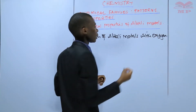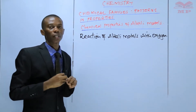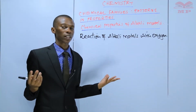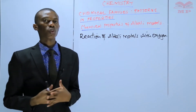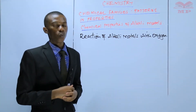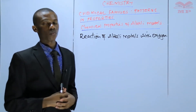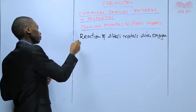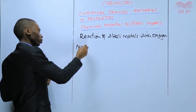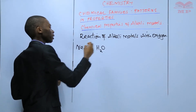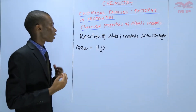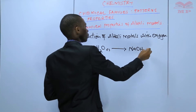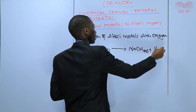So how do alkali metals react with oxygen? Just before that, when you cut a small piece of sodium metal and expose it in air, you expect that this piece of sodium is going to react with atmospheric water. When it reacts with atmospheric water, it leads to formation of sodium hydroxide and some hydrogen gas is produced.